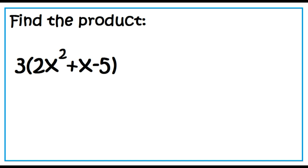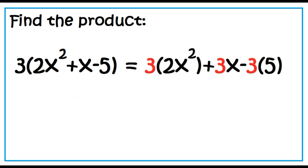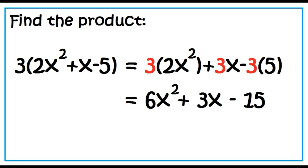Multiply by distributing 3 to each of the terms. 3 times the quantity 2X squared plus X minus 5 is equal to 3 times 2X squared plus 3 times X minus 3 times 5. This is equal to 6X squared plus 3X minus 15.